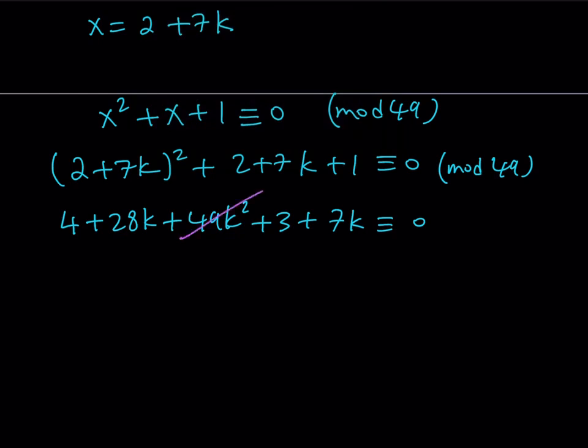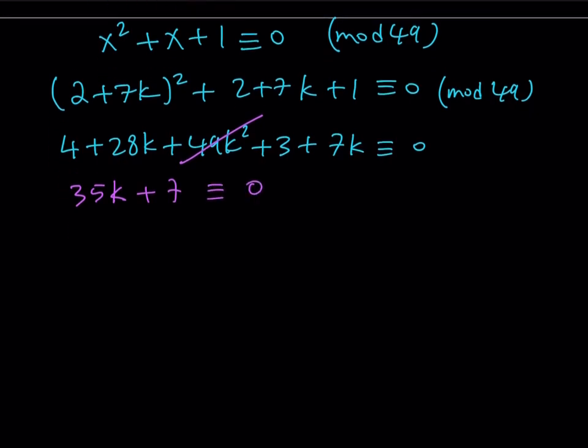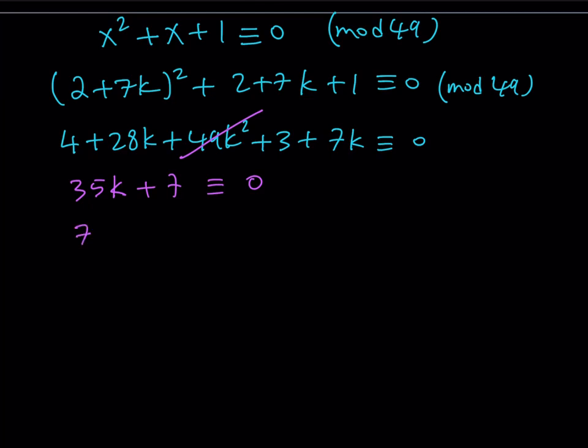So this is 0 (mod 49), obviously. We can just go ahead and simplify that and continue. This gives me 35k + 7. So now we get this mod 49. And one of the things I can do is I can just factor out a 7 and this gives me 7(5k + 1). Now what is that supposed to mean?